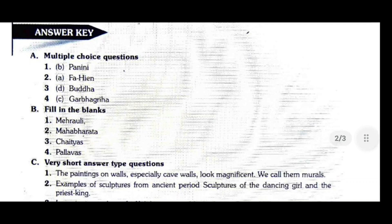The first multiple choice question: Ashtadhyayi, meaning the 8th chapter, was composed by whom? The answer is option B — Panini. Next question: He visited during the reign of Chandragupta II. His name is Fahien — option A, Fahien.